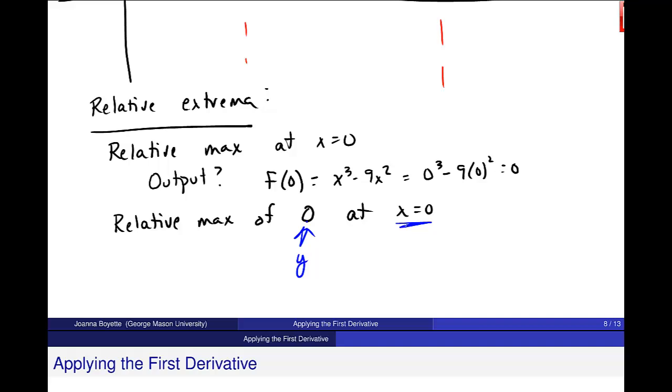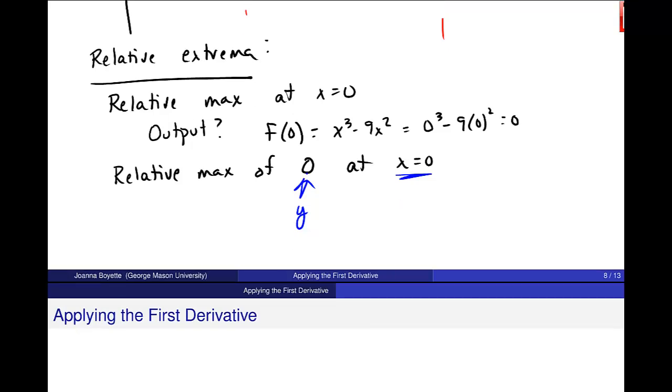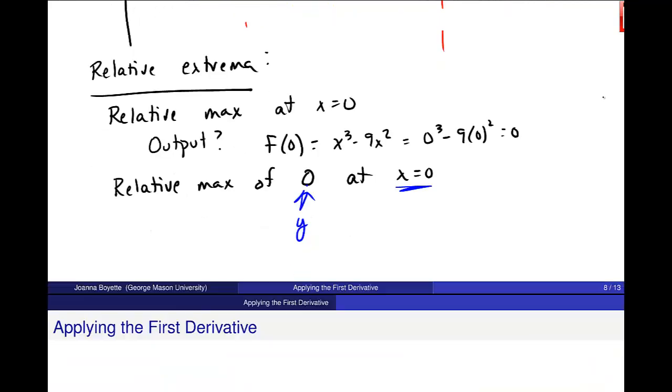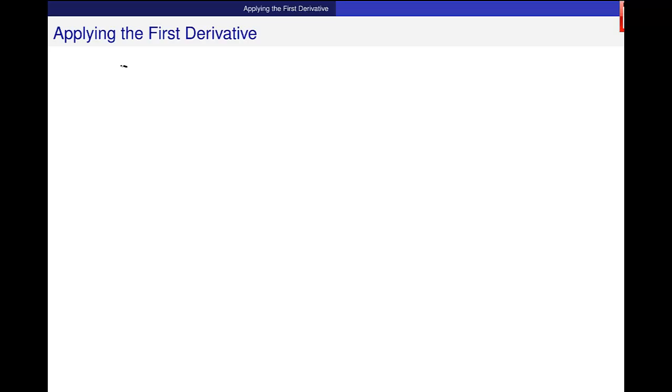Now, I have to also do when x is equal to 6. I want to reiterate, this should be a minimum at x equals 6. Let me just find the output value. f at 6. I'm using the derivative, and I don't want to do that. Let me make sure f of x equals x cubed minus 9x squared. You've got to be careful about what you're plugging things into. 6 cubed minus 9 times 6 squared. And I get negative 108.